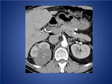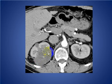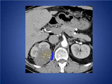Here is another patient with a right kidney mass showing thick enhancing septation, consistent with renal cystic tumor.